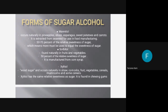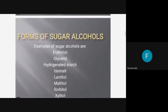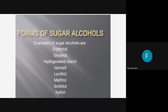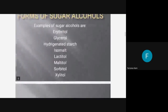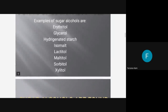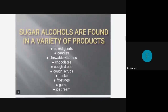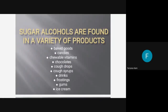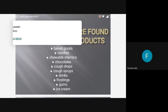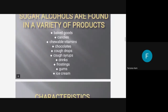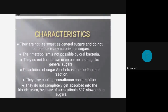There are other forms of sugar alcohols such as erythritol, glycerol, hydrogenated starch hydrolysate, lactitol, maltitol, sorbitol, and xylitol. Sugar alcohols are found in a variety of products like baked goods, candies, chewable vitamins, chocolates, cough drops, syrups, drinks, frostings, gums, and ice creams.